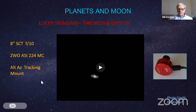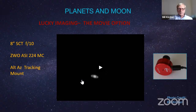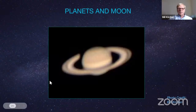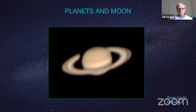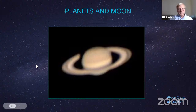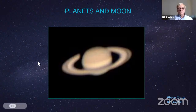After processing, that little tiny featureless image became something much more detailed. It's a little fuzzy — I didn't hit my minimum of 2,000 frames, probably only 1,000. It could be sharper, but you can see bands, detail, and color. You don't see any color at first, and then you do — and it's pretty amazing.